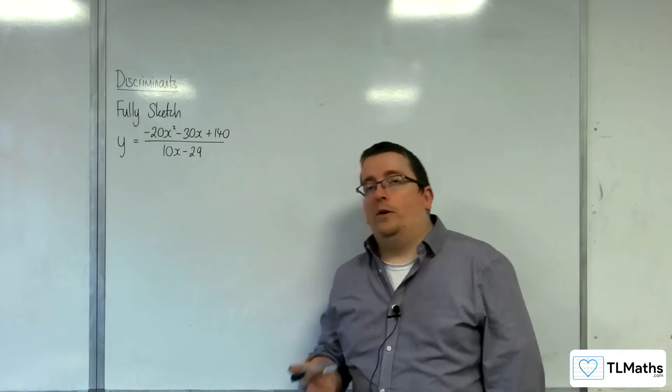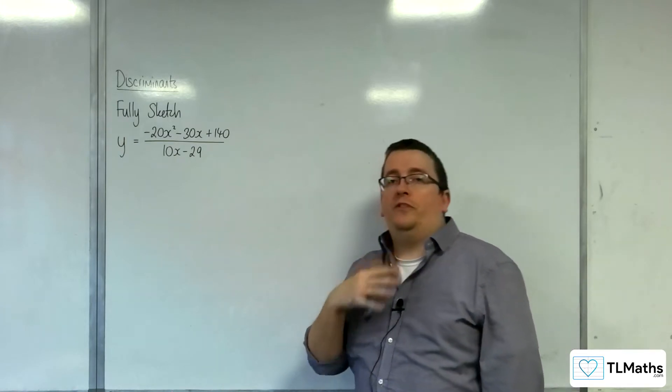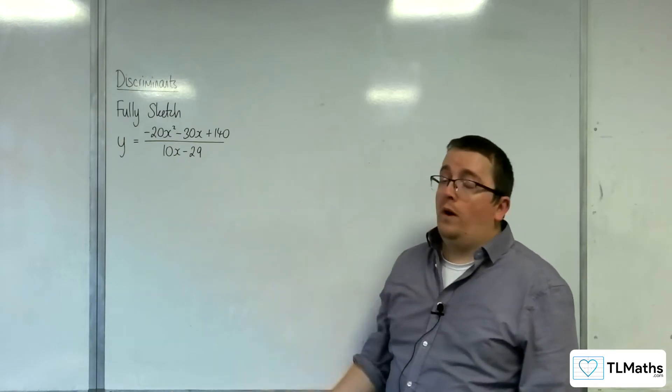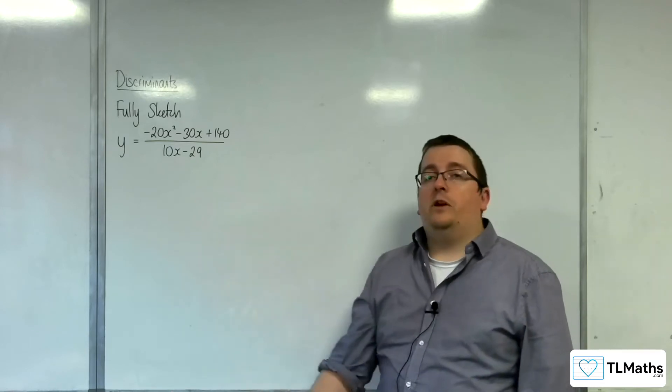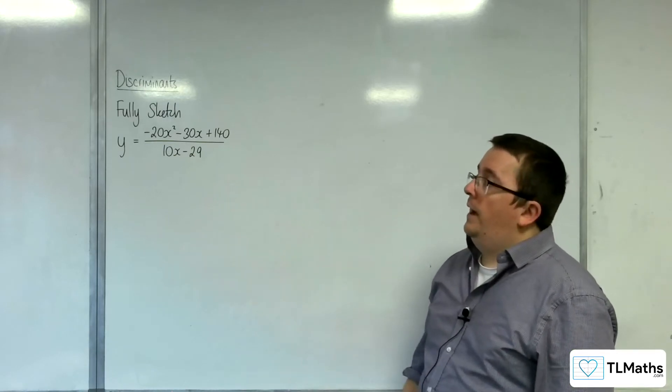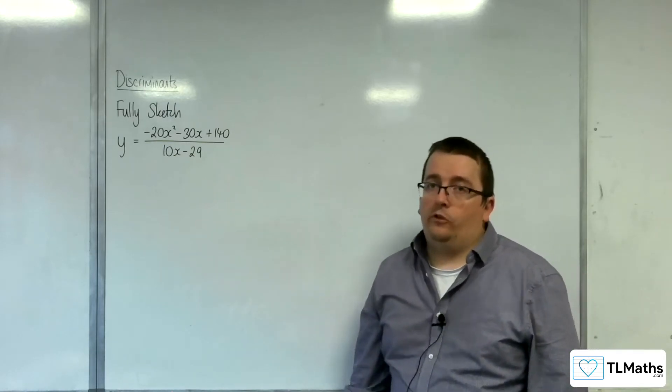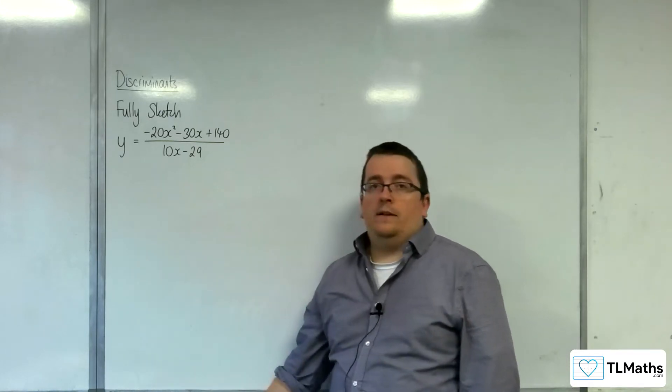This means I want to find out all of the vertical asymptotes, any points where it crosses the x-axis, anywhere where it crosses the y-axis, if there are oblique asymptotes and their equations, and any stationary points as well. Absolutely everything we can do to get this sketch.